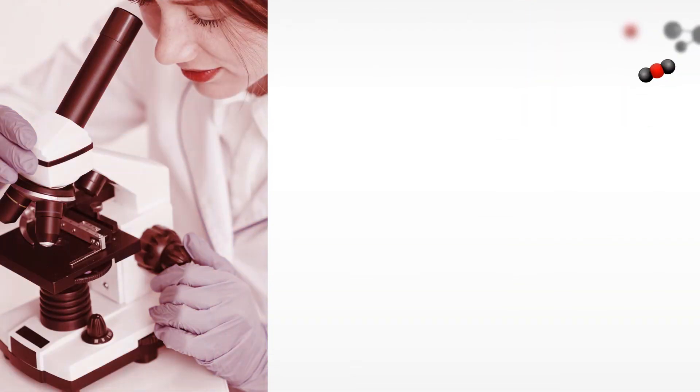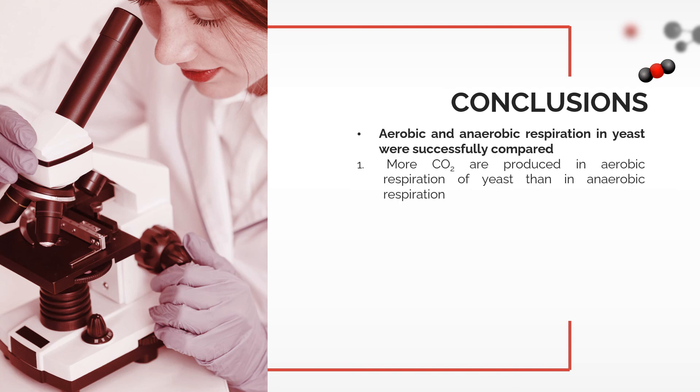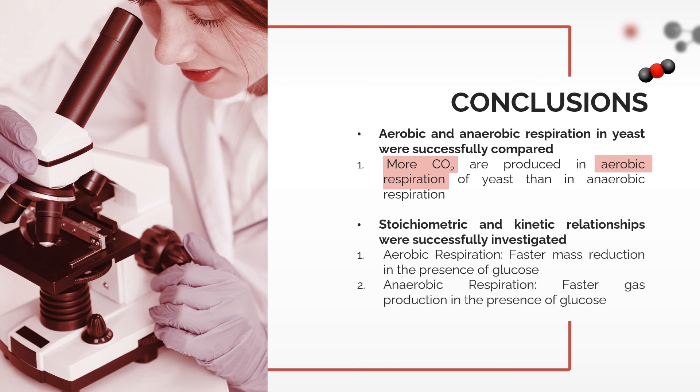In this experiment, the carbohydrate metabolism of yeast was investigated by varying the presence of glucose and oxygen in the setups and by comparing their production of carbon dioxide. It was found that the yeast can produce carbon dioxide the fastest in the presence of glucose and oxygen. The stoichiometric and kinetic relationships were also investigated, showing that gas production, which translates to cellular respiration, both occurs faster in the presence of glucose, may it be an aerobic or anaerobic pathway.